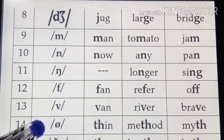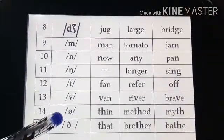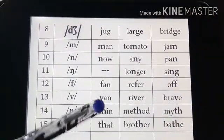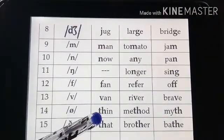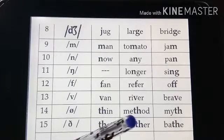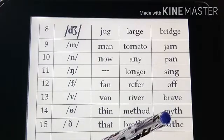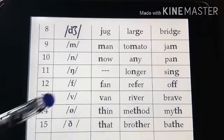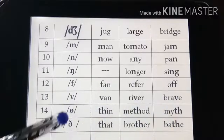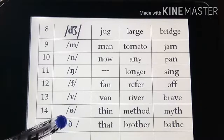This is /θ/ (th). We can see this sound in 'thin' — /th/ is initial. 'Method' — /th/ is medial. 'Myth' — /th/ is final. These two th sounds are produced by putting the tip of the tongue at the teeth.